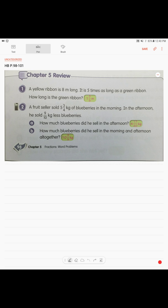Yellow ribbon and green ribbon. After you read the problem, the yellow ribbon is 8 meters long. It is 5 times as long as the green ribbon. What does it mean? The green one is shorter. How much shorter? Do your math here.